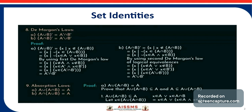This completes De Morgan's laws. Next are the absorption laws. The first absorption law is: A union (A intersection B) is equal to A. The second absorption law is: A intersection (A union B) is equal to A.